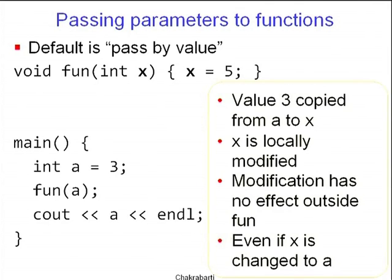By default in C and C++, parameters are passed by value, which means an explicit copy is made. Space inside the function is allocated for every formal parameter. When main initializes a to 3 and then calls fun(a), space is allocated inside fun for x, and the value 3 is copied into x — that's a different cell from a. So when the function assigns x to 5, that has no connection with a. When the function ends, the storage for x is destroyed. When we print a at the end, we get the value 3. The value 3 is copied from a to x, x is locally modified, and has no impact on the outside world.